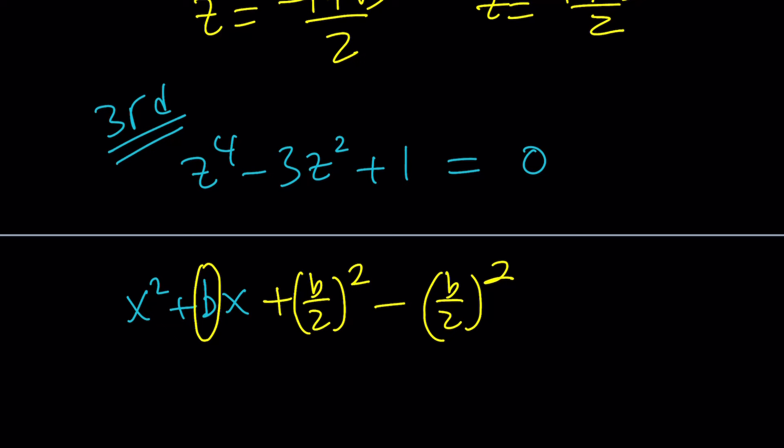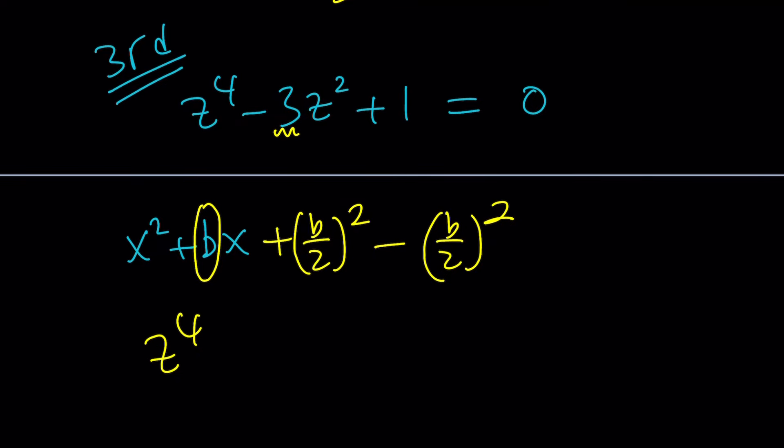The coefficient of z squared in this case is 3, half of 3 is 3 halves, and if you square it you're going to get 9 fourths. So I do need 9 fourths to be added to both sides.